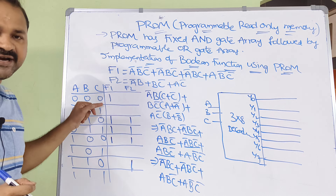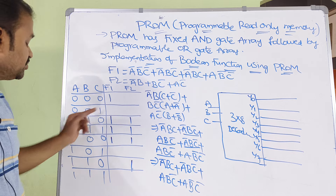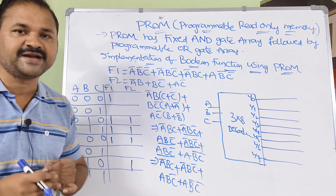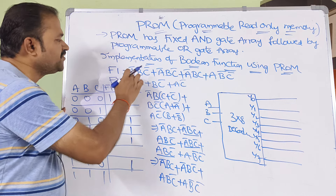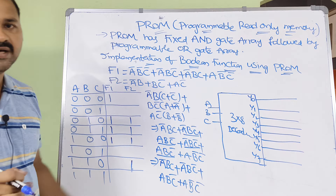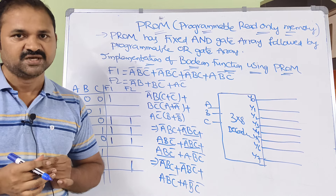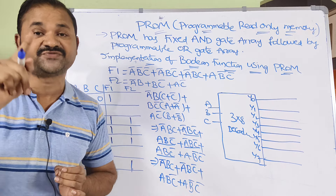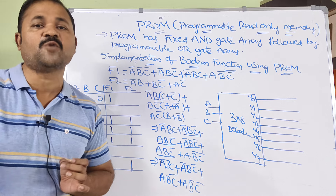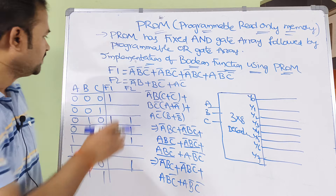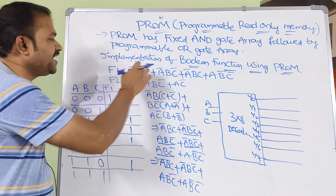Decimal 0 in binary notation is 000, and 1 in binary notation is 001; likewise 7 in binary is 111. If we observe the boolean function, we have A bar, B bar, C bar. In minterms (sum of products), the actual variable is 1 whereas a complemented variable (bar) is 0. So A bar, B bar, C bar means 000, and since A=0, B=0, C=0, the output F1 is 1 at this row.